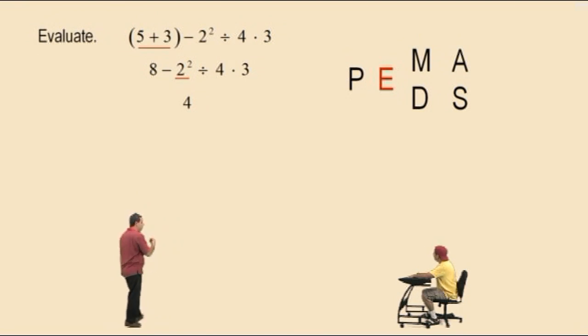So 2 squared is 4. And now bring down your work. Watch. 8 subtract 4, right? Divided by 4 times 3. So be very careful with that.